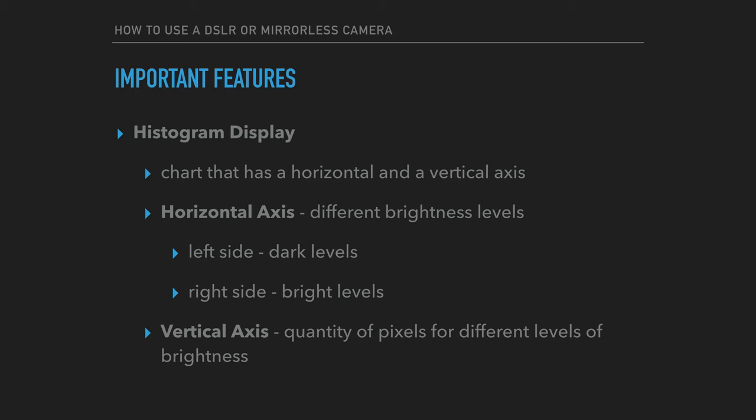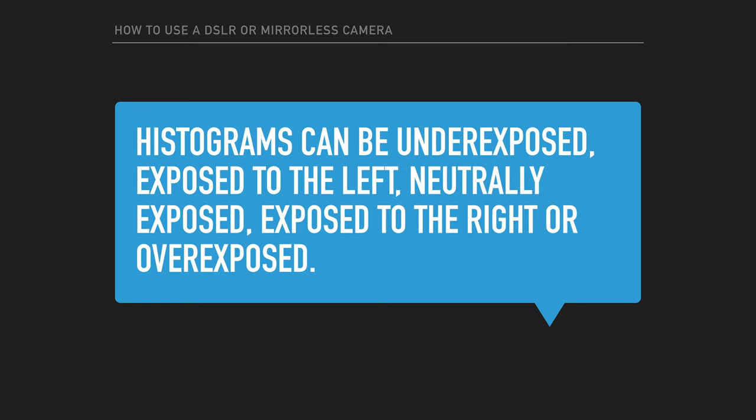Another feature is the histogram display. The histogram is a two-dimensional chart with a horizontal and a vertical axis. The horizontal axis represents the different brightness levels — the dark levels are on the left side and the bright levels are on the right side. The vertical axis represents the quantity of pixels for the different levels of brightness. Histograms can be underexposed, exposed to the left, neutrally exposed, exposed to the right, or overexposed.